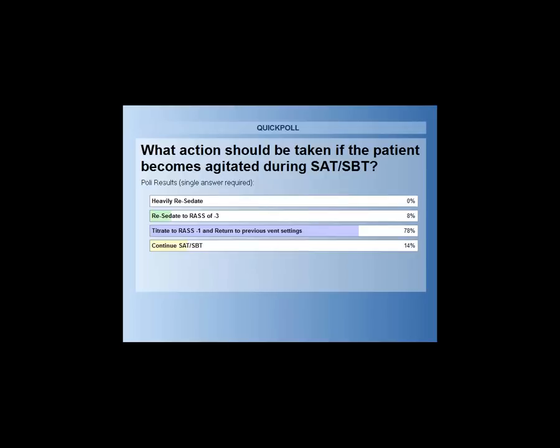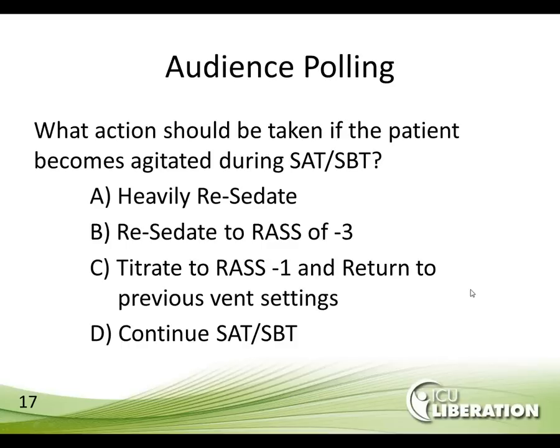It looks like the majority answered: titrate the RASS back to minus 1 and return to the previous ventilator settings — which is the most correct answer. Sometimes you can try to calm the patient down during the safety screen. But if the patient is clearly failing, resedating heavily is not the correct answer. The intent is to get them back to as light a sedation as possible. If they continue to be agitated, return to previous ventilator settings — but that doesn't mean waiting until tomorrow. It can be repeated in an appropriate period of time.